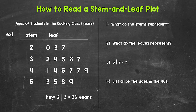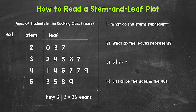Let's jump into our first example where we have a stem and leaf plot displaying the ages of the students in, let's say, an evening cooking class. When working with stem and leaf plots, every value is split into a stem and a leaf. So these ages are going to be split.